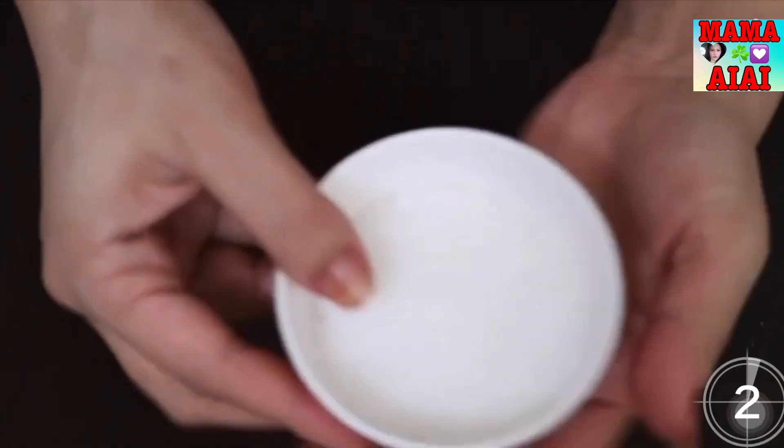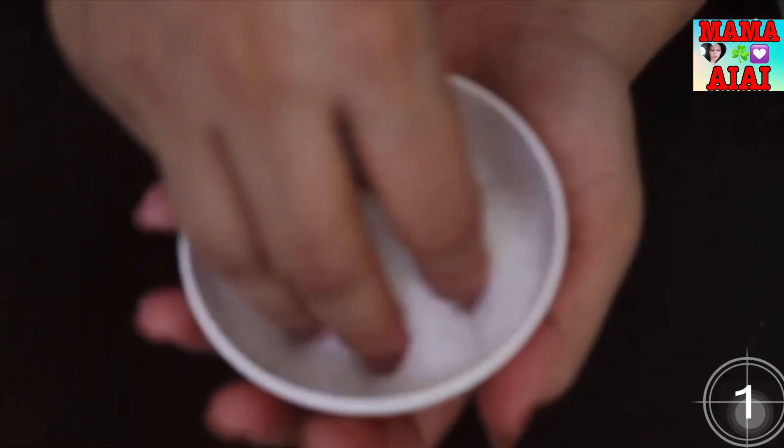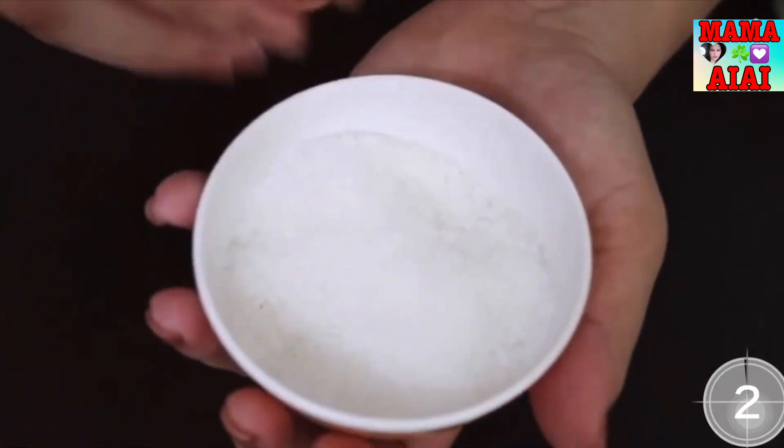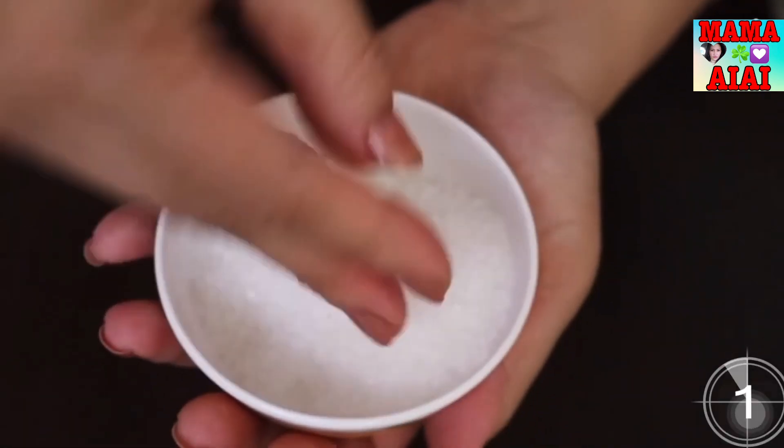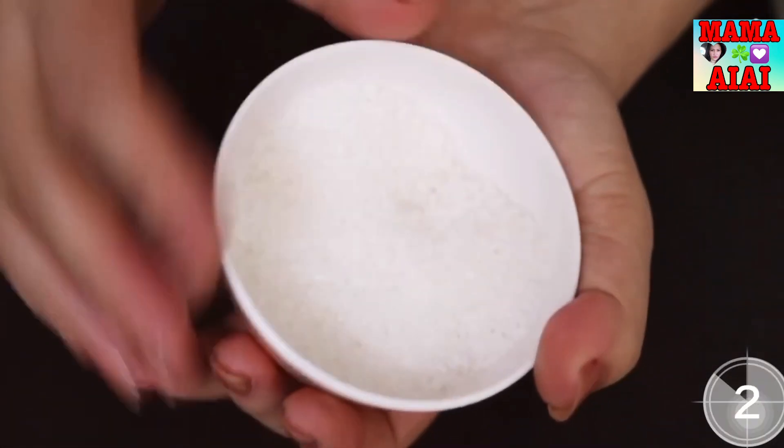Step one, I am going to share an anti-aging hand scrub. To prepare the anti-aging hand scrub you need two simple ingredients. The first ingredient that you need is sugar.